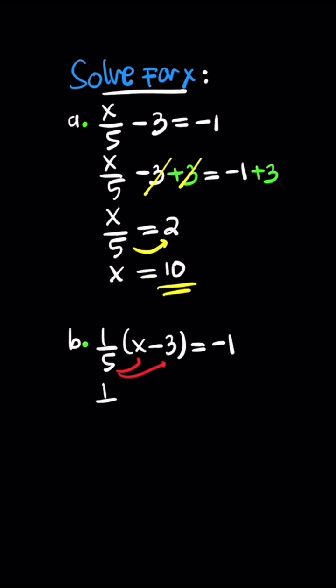1/5 x - 3/5 equals -1. Multiply by 5 to get the value of x and remove the denominator. So x - 3 equals -1.